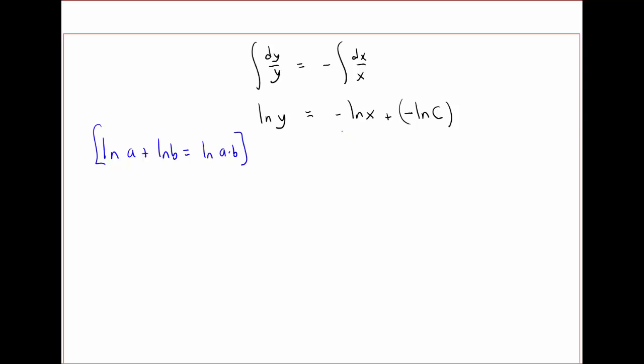So if we apply that here, this term will equal minus natural log of cx, since both of them have a minus sign there. So we have natural log of y equals minus natural log of cx. Well that in turn is equal to the natural log of cx to the -1.